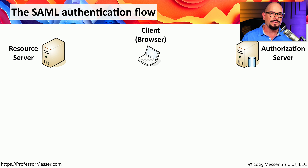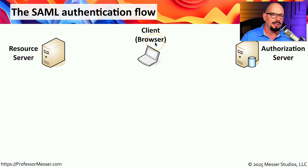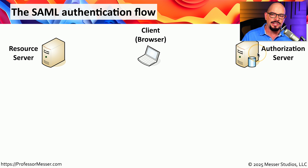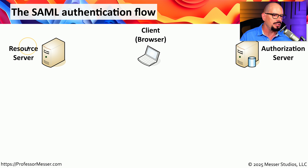The authentication flow with SAML is relatively straightforward. There are three devices involved in this SAML workflow. We'll start with the one that you're using at your laptop — you're probably in a browser, and we refer to this as the client machine. We also have a device that we'd like to access, so we'll need some type of authentication to access our resource server. And lastly, there is an authorization server that's going to check our credentials and give us access to the resource server.